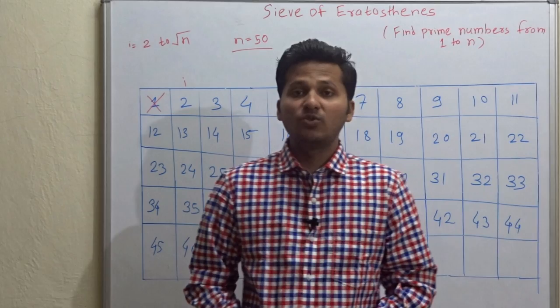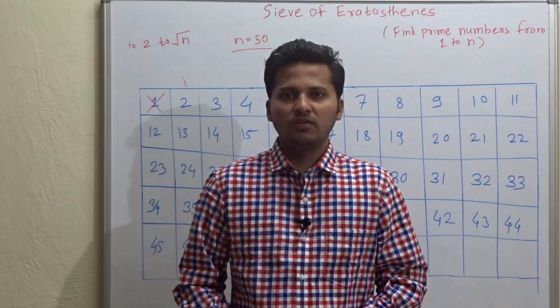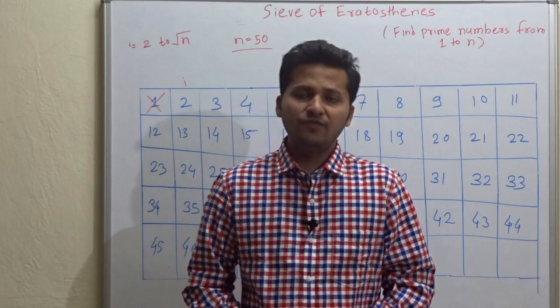Hello friends, today I am going to tell you about prime numbers and algorithm for prime number. What is prime number? A prime number is a number which has only two divisors, that is one and itself.